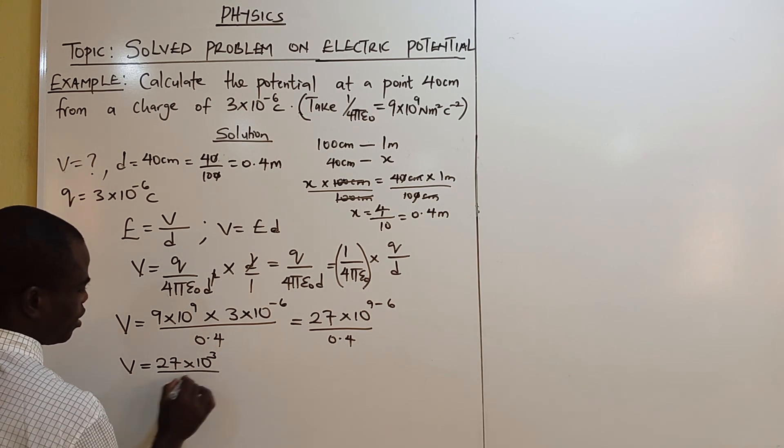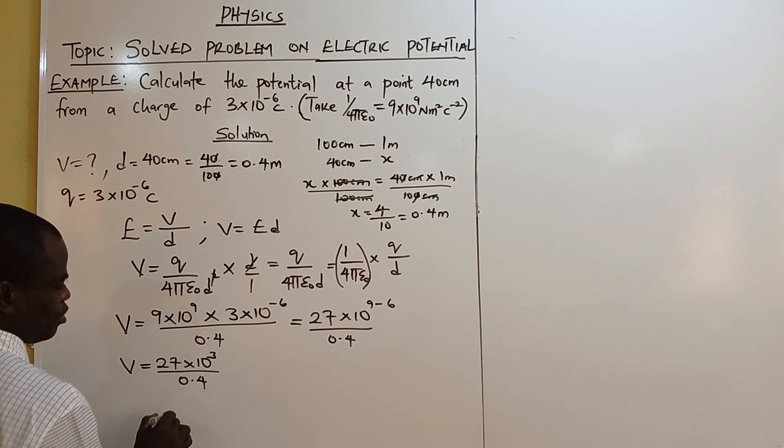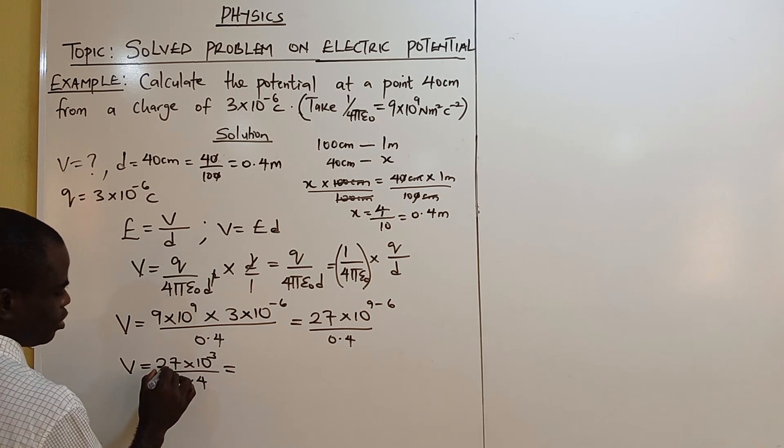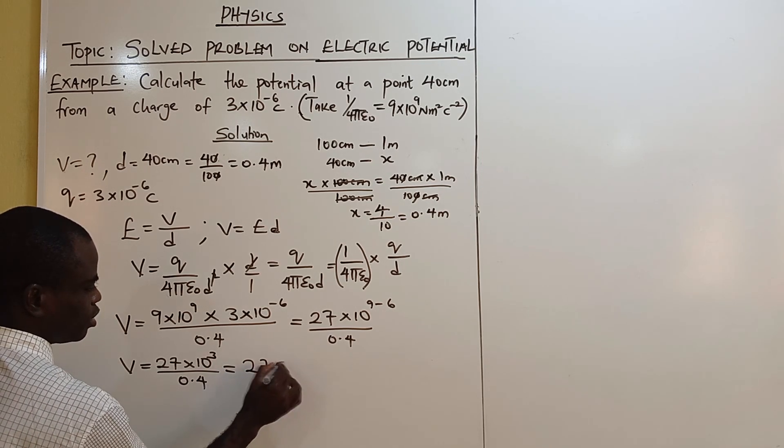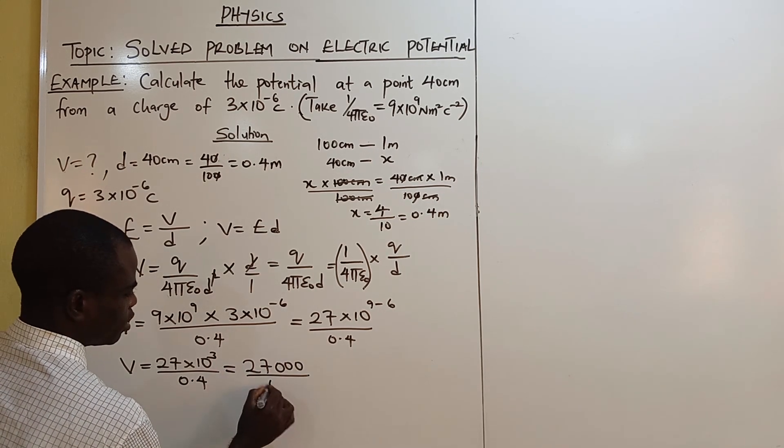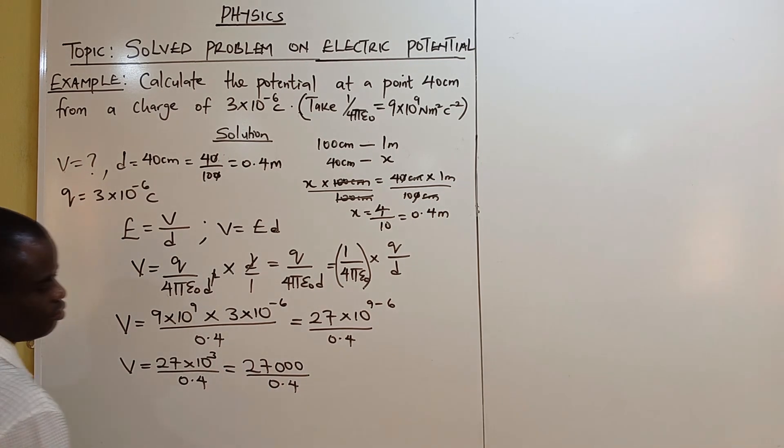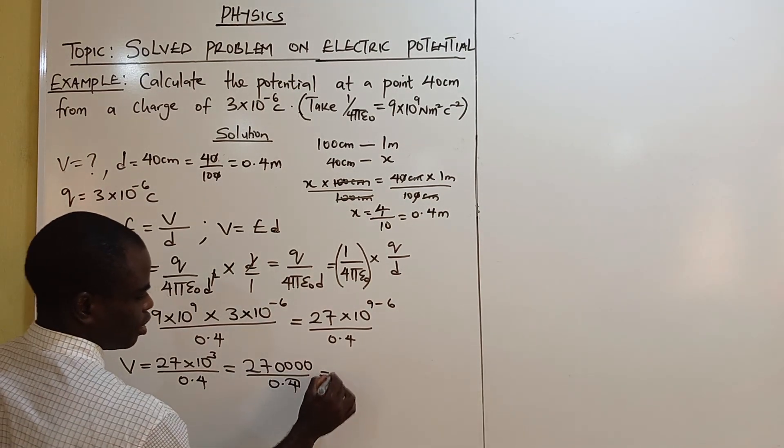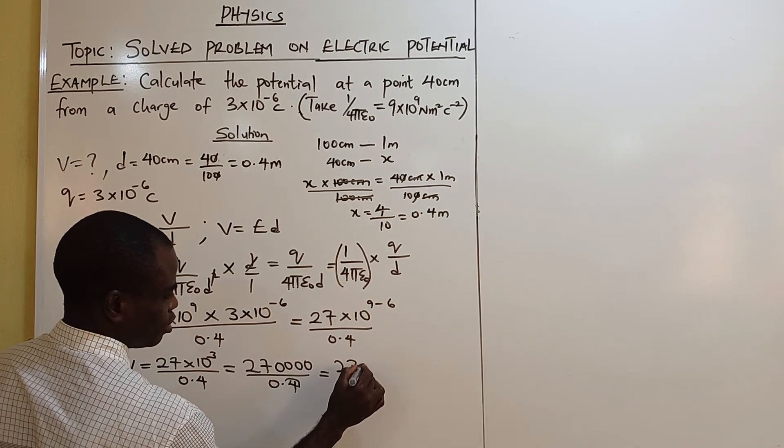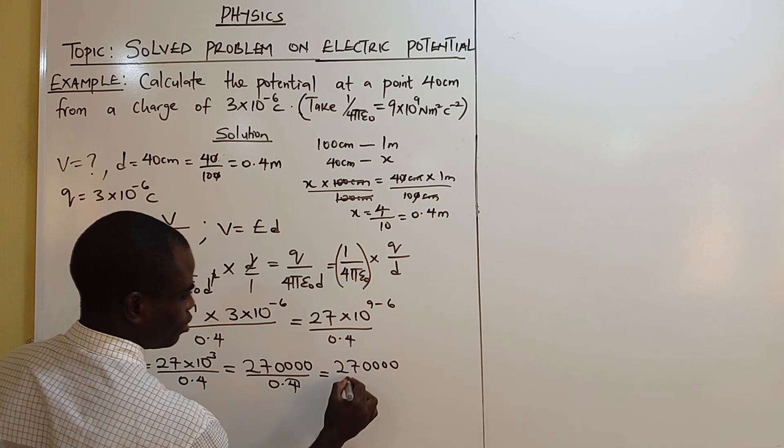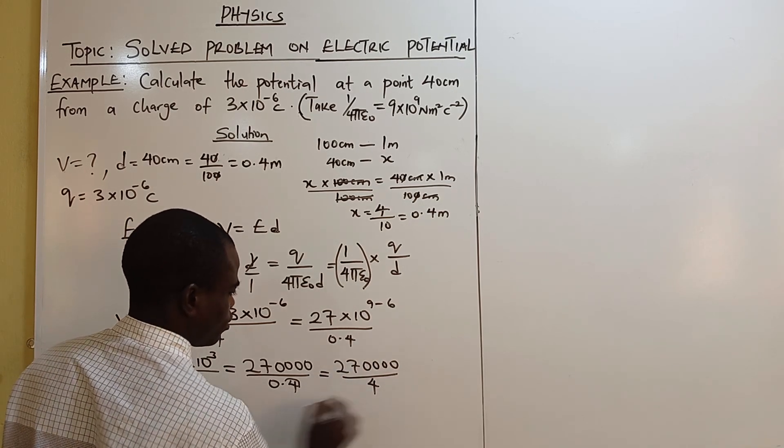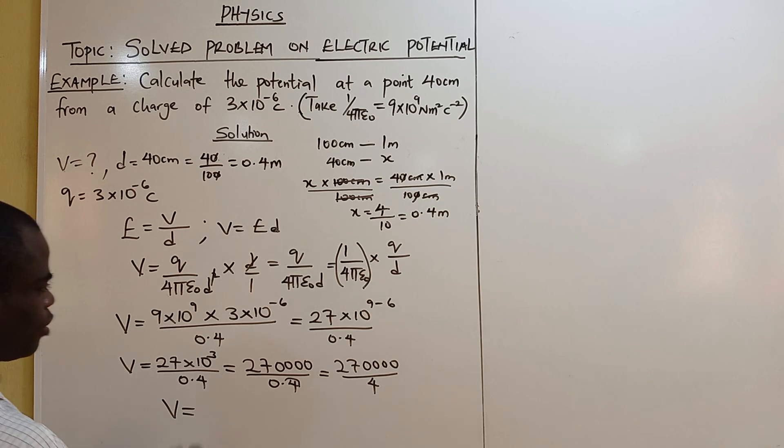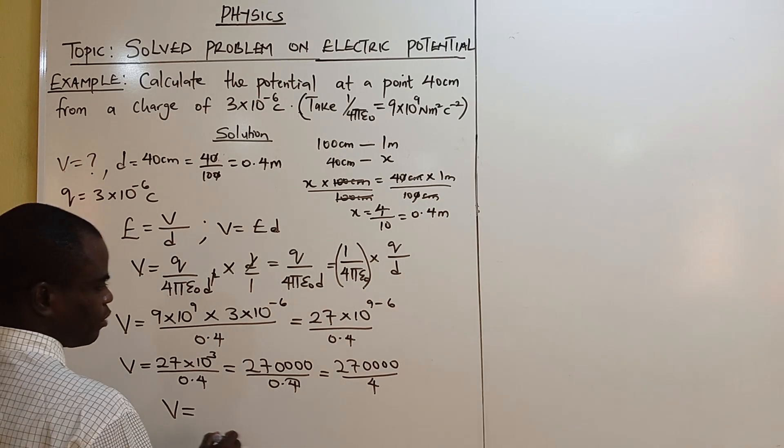Divided by 0.4. Okay, when you shift this one, it's like when you have 27,000 divided by 0.4. When you shift once, you add a zero, you have 270,000 divided by 4.